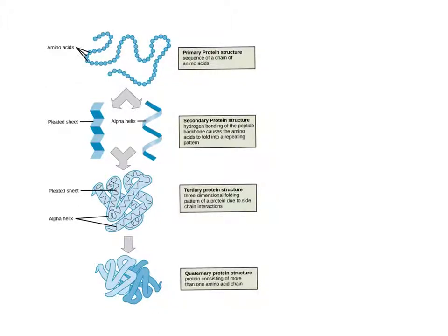This video is briefly going to go over the different levels of protein structure. We have the primary structure, which is formed by linking separate amino acids together in their sequence. Then we have secondary protein structure, which is formed by hydrogen bonds of the backbone residues of the amino acids. Then we have tertiary, which is global folding of the protein formed by various interactions of the amino acid side chains. Quaternary protein structure is when two different proteins come together and bond, but they're not covalently bound together.